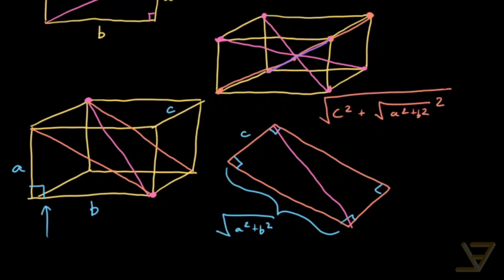And square root all over that. And that's equal to the square root of A squared plus B squared plus C squared. And that is the length of the space diagonal.